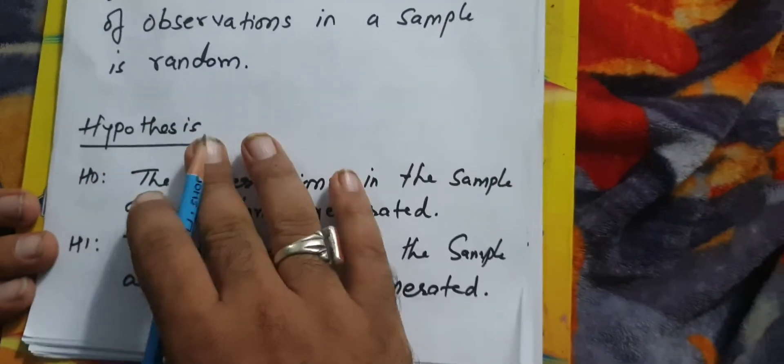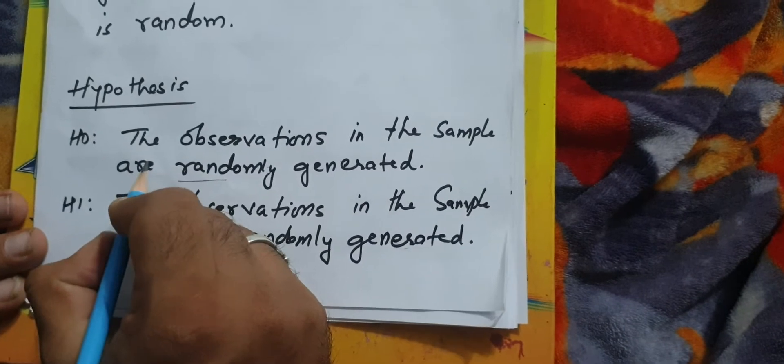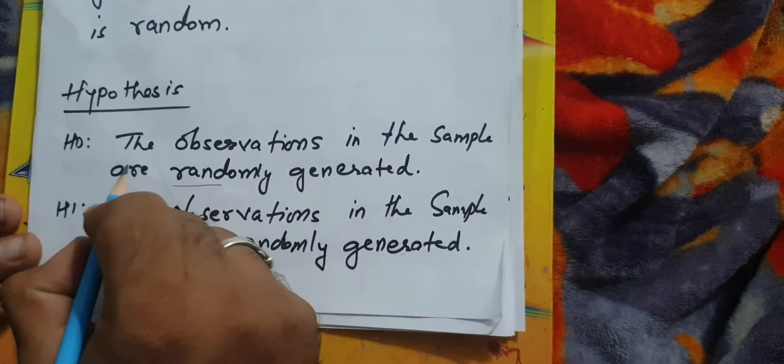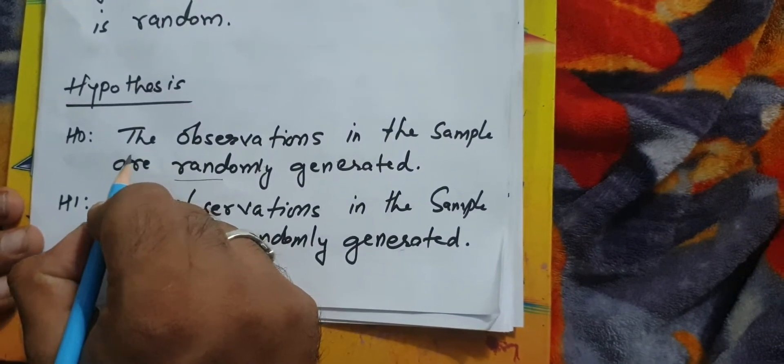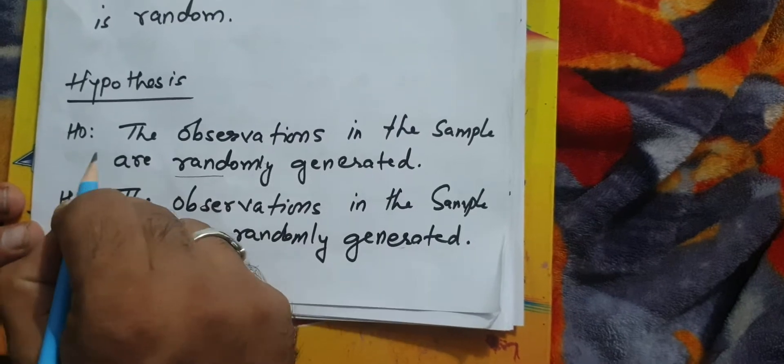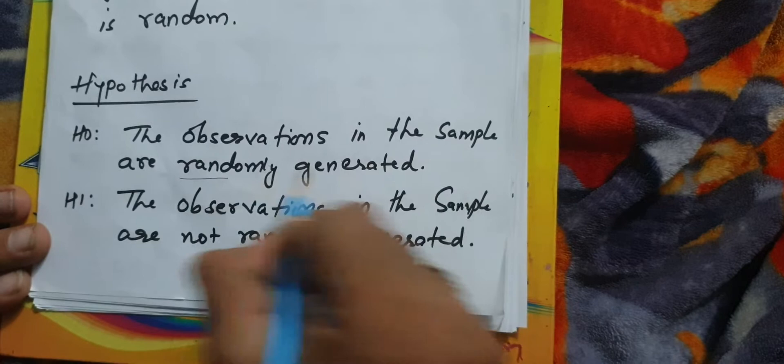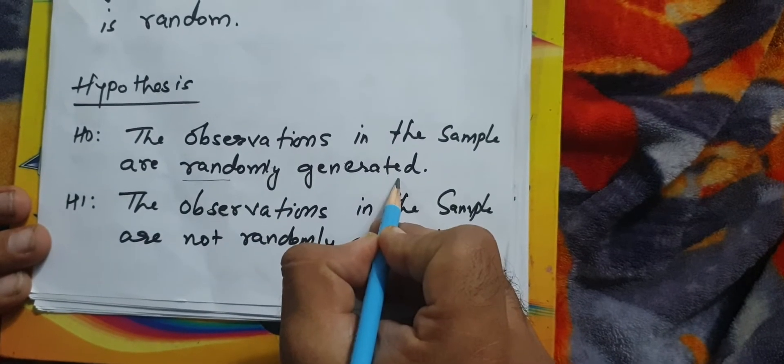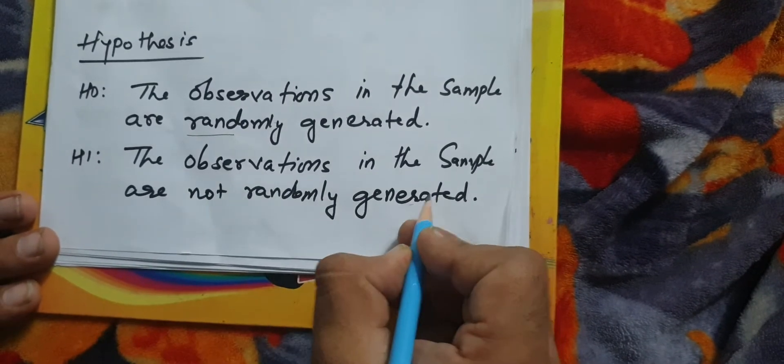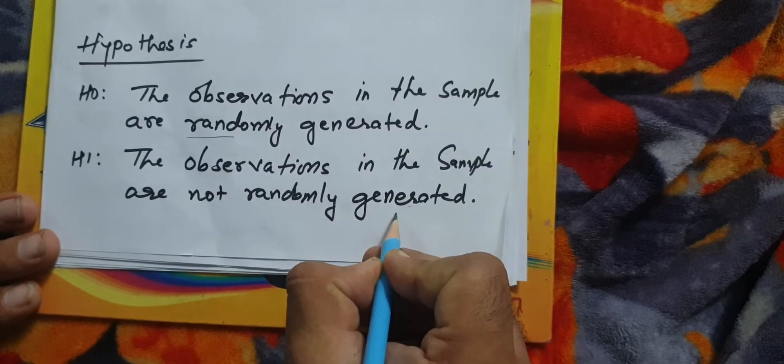Here also hypotheses are prepared. There are two hypotheses, null and alternate. The null hypothesis says that the observations in the sample are randomly generated, whereas alternate states that the observations in the sample are not randomly generated.